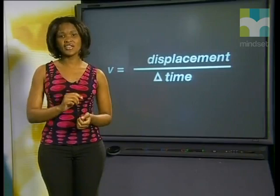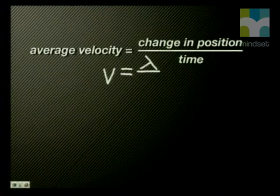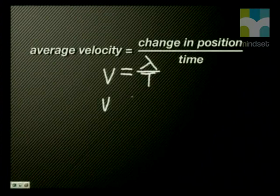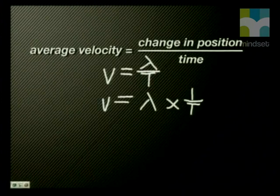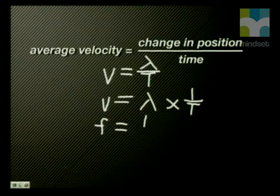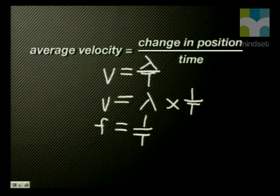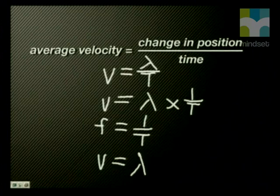We could also write this as v equals lambda times one over T. Now we know that f equals one over T. So we can simplify the equation even further to become v equals lambda times frequency.